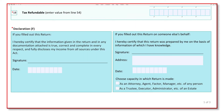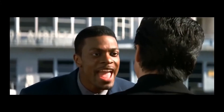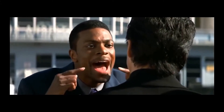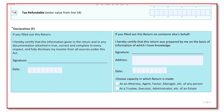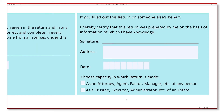Moving along, we enter Section F: the Declaration. This is the most important part of the return because you are declaring that everything is true and correct and that you have disclosed income from all sources under the Income Tax Act. Your signature and date are really important. If you are filling out the return on someone else's behalf, you must state the capacity in which the return is made, such as whether you are an attorney, trustee, executor, etc.